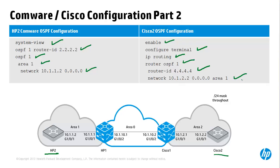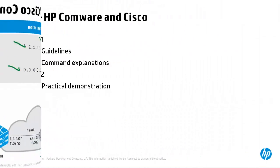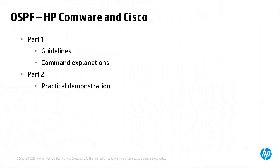In summary, process numbers are locally significant and don't have to be the same on all routers. Router IDs need to be unique throughout the OSPF domain. That concludes part 1. In part 2 we'll continue with the configuration and testing of OSPF on HP Comware and Cisco switches.